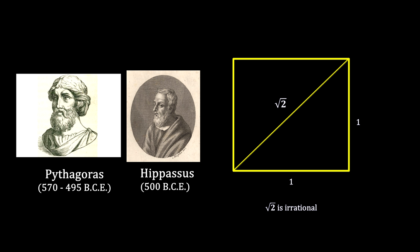At this time in Greek society, numbers were intimately connected to their religion, so Hippasus' finding was considered heresy.